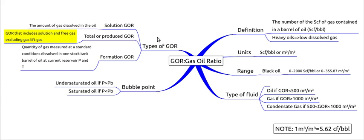The last one is formation GOR. It is the quantity of gas measured at standard conditions dissolved in one stock tank barrel of oil at current reservoir pressure and temperature, which means it is the GOR measured in the reservoir conditions of pressure and temperature.